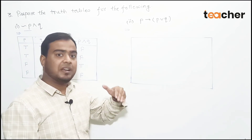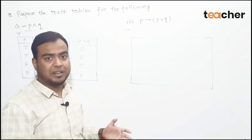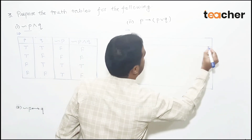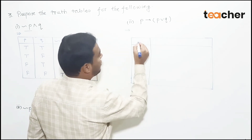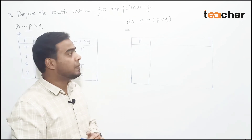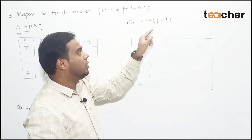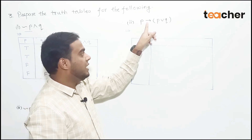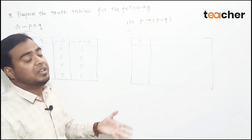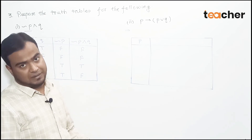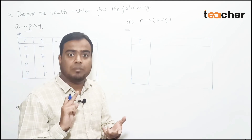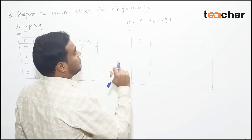The number of rows depends on the number of statements — if there are two statements there are four rows. The number of columns depends on the number of connectives. Here we have two connectives: implication and disjunction, giving two extra columns, so four columns total.